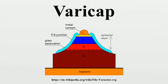Varactors are used as voltage-controlled capacitors. They are commonly used in voltage-controlled oscillators, parametric amplifiers, and frequency multipliers. Voltage-controlled oscillators have many applications such as frequency modulation for FM transmitters and phase-locked loops, which are used for the frequency synthesizers that tune many radios, television sets, and cellular telephones.